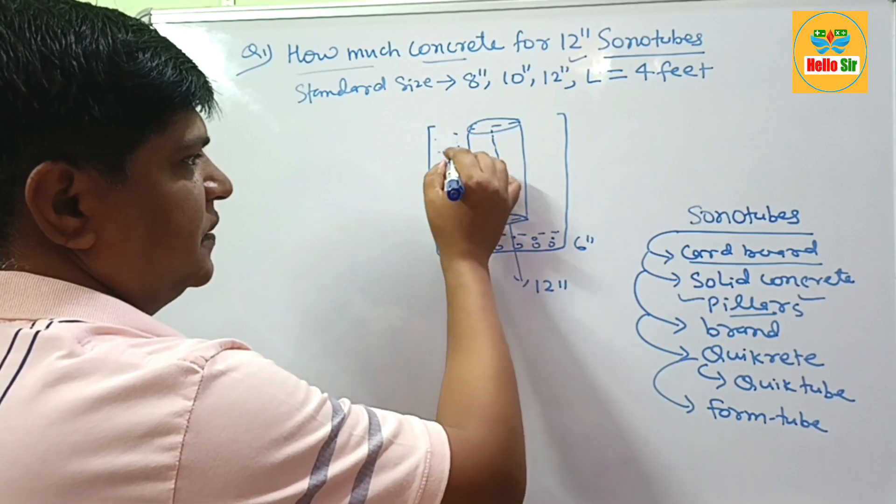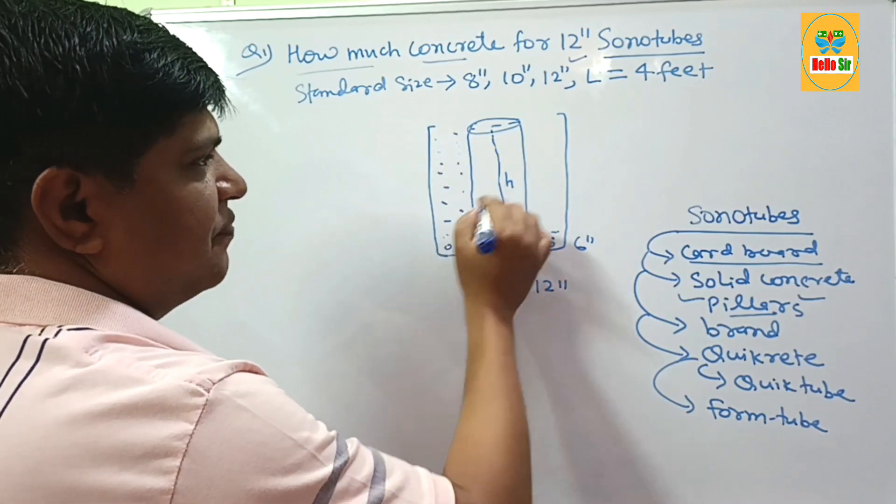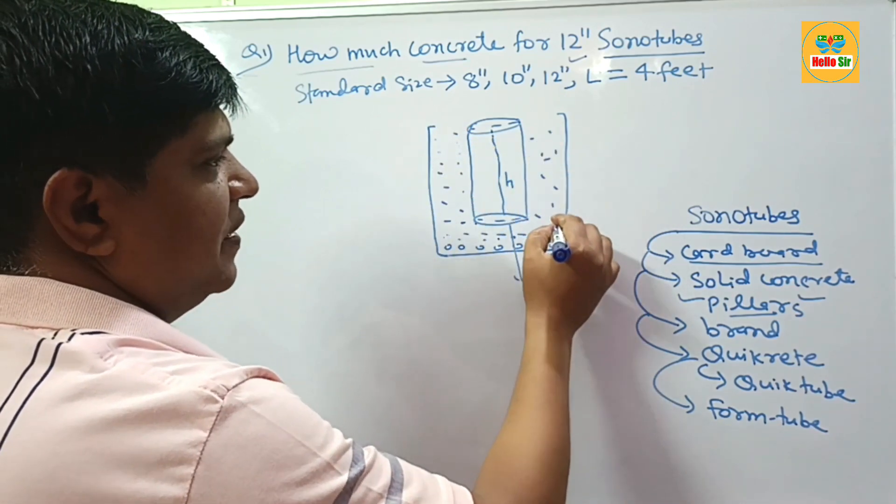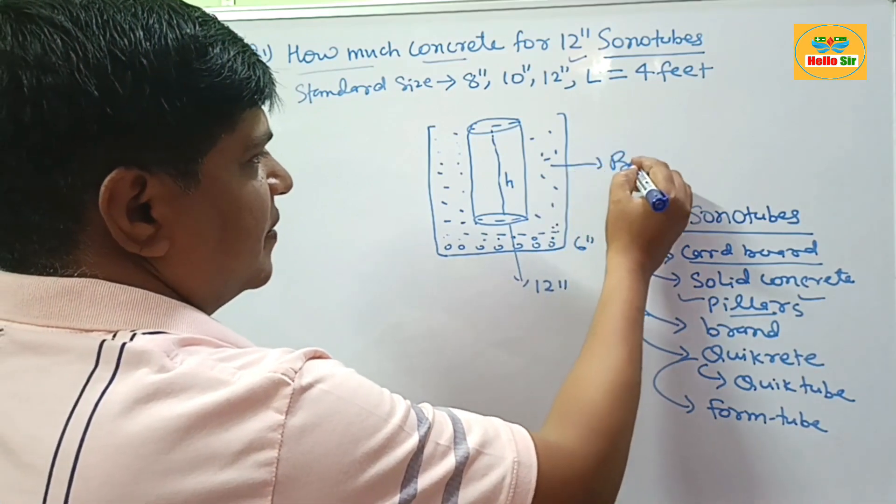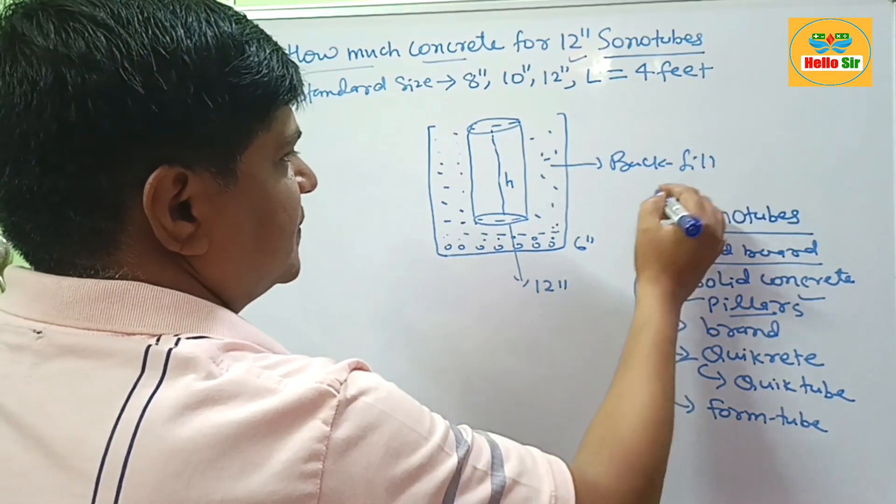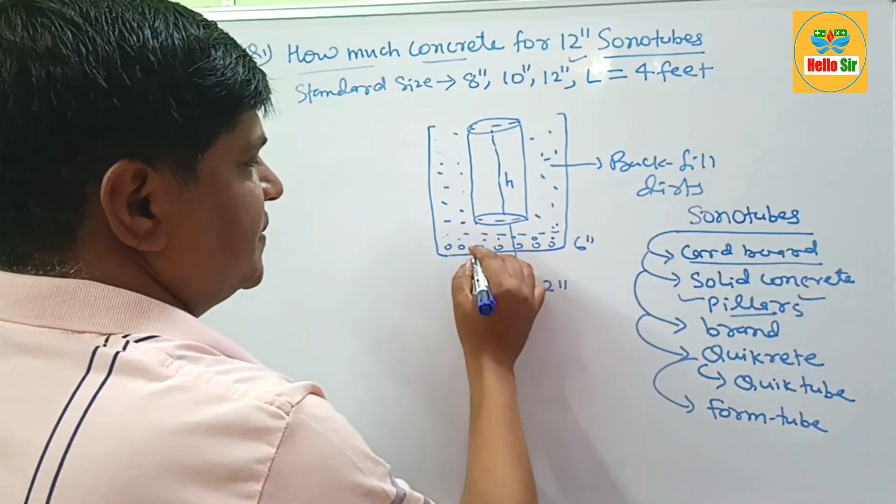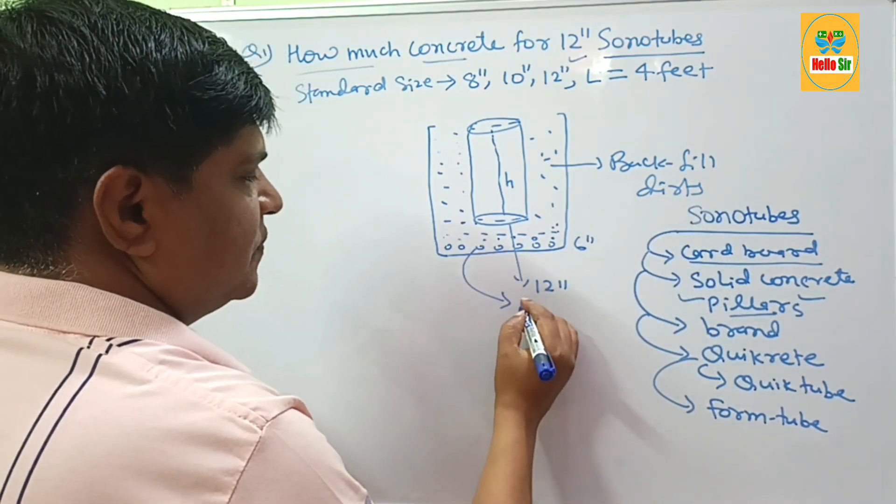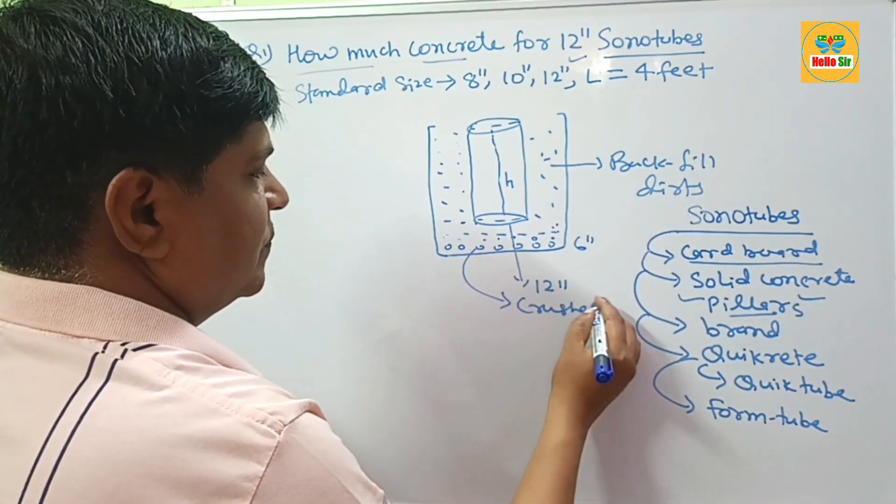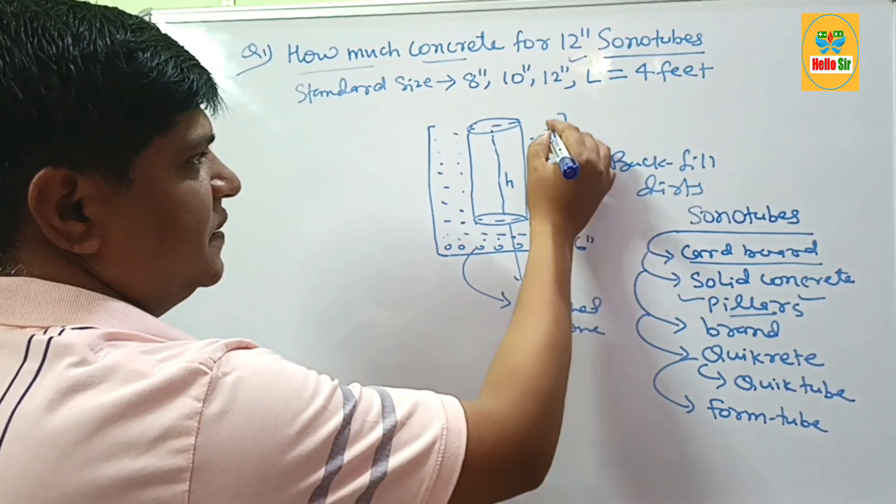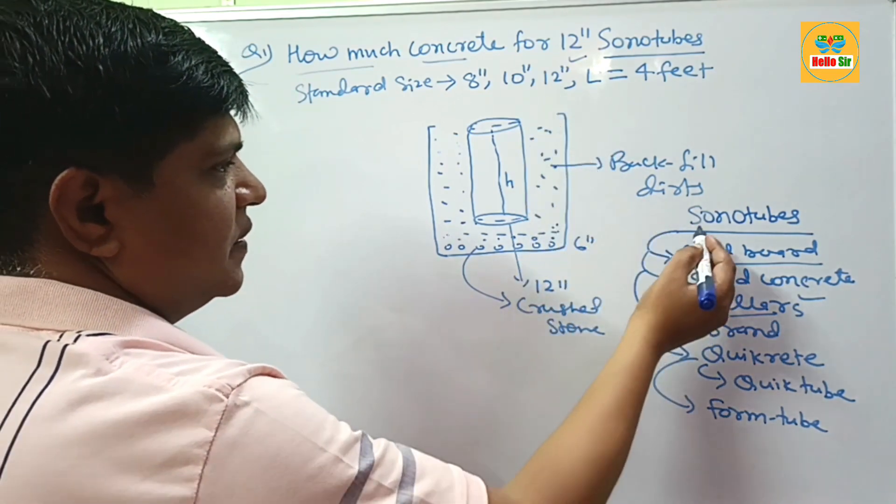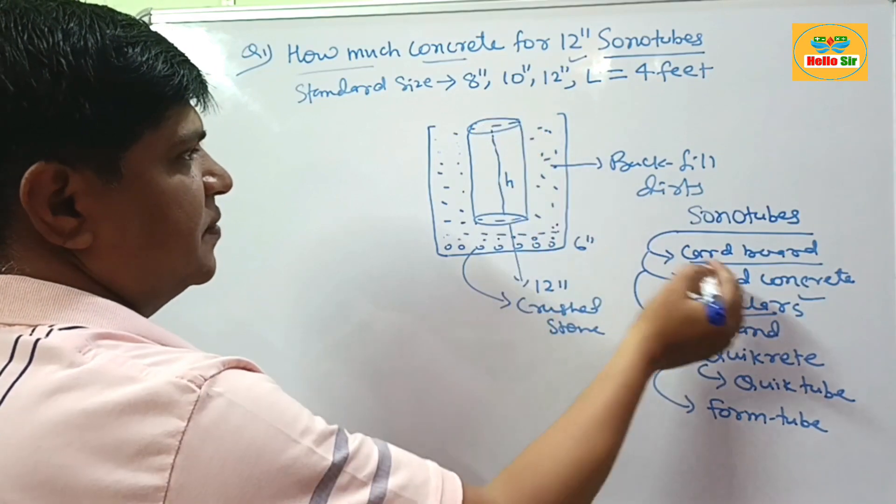And the remaining space of your holes can be filled with backfill dirt. This will be backfill dirt. And this one is crushed stone. And compact this. After compacting, you can easily cast the pillar.